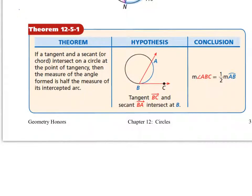That brings us to theorem 12-5-1, which says: if a tangent and a secant or chord intersect on a circle at the point of tangency, then the measure of the angle formed is half the measure of the intercepted arc. This happens with tangents only.